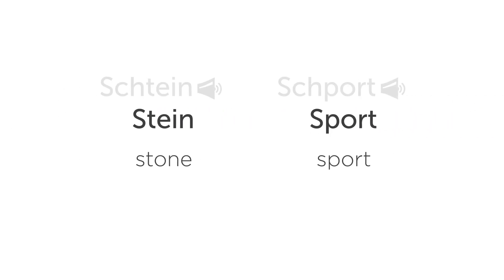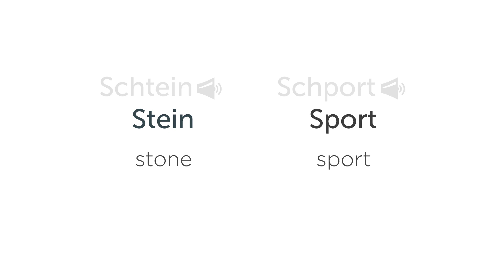Words beginning with S-T or S-P are also pronounced with the 'Sch' sound, but this only applies to words beginning with S-T and S-P. For example: Stein, Sport. Remember, this only applies to words beginning with S-T and S-P.